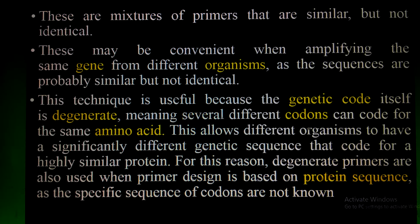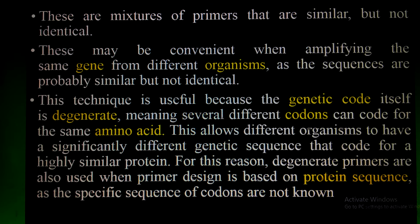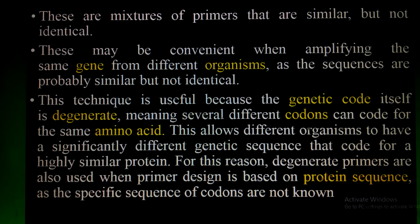Degenerate primers may be convenient when amplifying the same gene from different organisms. For example, if you want to amplify the collagen gene in humans, mice, and many other organisms — in some the sequence is identified but in others it is not — you can use degenerate primers to determine that sequence. The sequences are probably similar but not identical. This technique is useful because the genetic code itself is degenerate, meaning several different codons can code for the same amino acid.